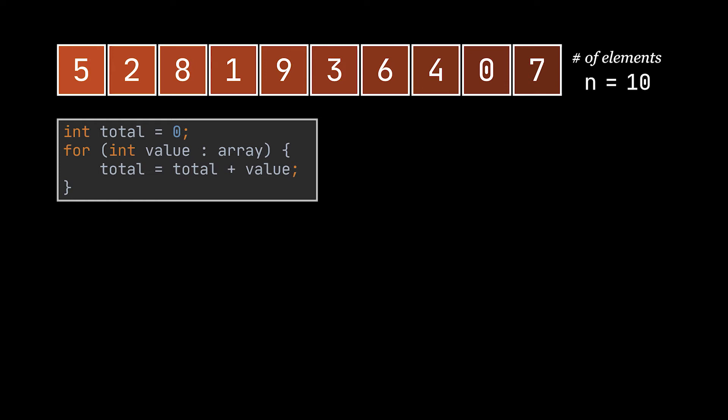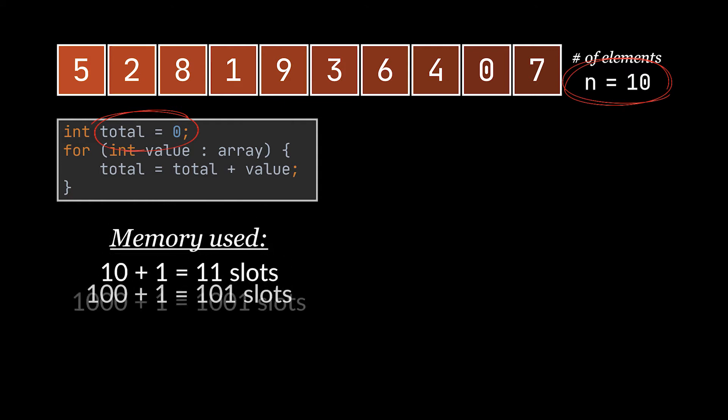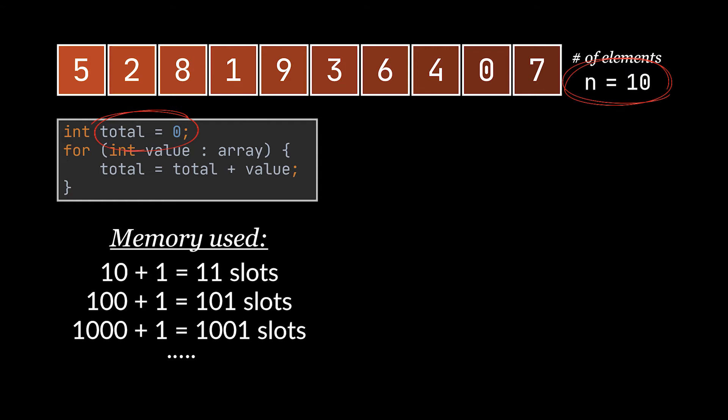Let's think together and try to find first the memory or space used behind this block of code. We first reserved a place in memory for every integer in the array — that is 10 integers — plus the integer named 'total', which gives us 11 slots in total. But not all arrays contain only 10 elements, so this number can vary. If the array contained 100 integers, we would reserve 101 slots; if 1000 items, 1001 slots would be needed.